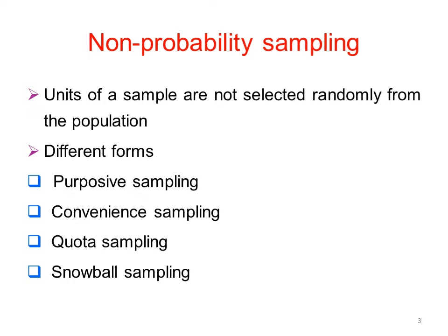Next is non-probability sampling. Here, samples are not selected randomly. In probability sampling, samples are selected randomly and each member of the population has an equal chance. In non-probability sampling, samples are not randomized and do not have an equal chance of selection.